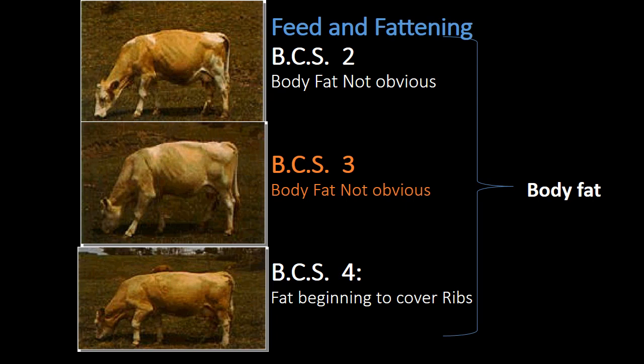Body condition score ranges from 2 to 4. At BCS 2, body fat is not obvious, skeletal structures are visible, muscle tissues are evident but not abundant, and there is no external fat — these animals are considered underweight. At BCS 3, body fat is not obvious and the skeletal structure is less visible but muscle tissues are evident. At BCS 4, fat begins to cover the ribs — this condition is particularly required during the finishing phase.